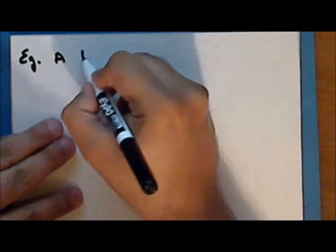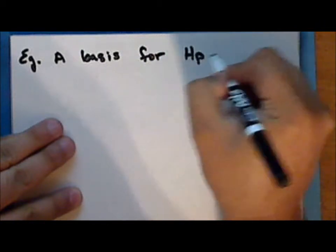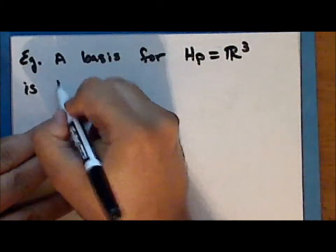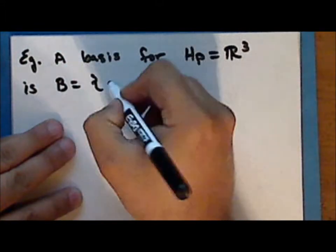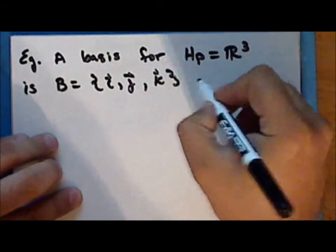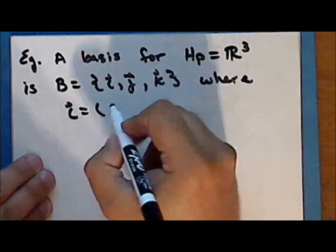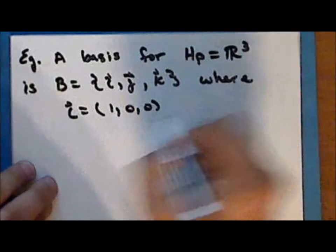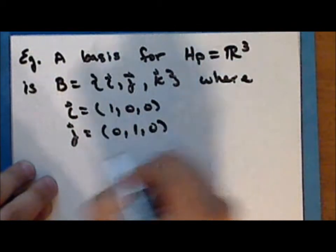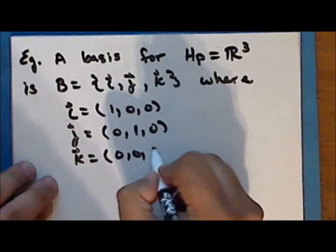A basis for the set of purely imaginary quaternions, considered as the coordinate space R³, is the set B containing the vectors i, j, and k, where the vector i is the ordered triple (1, 0, 0), the vector j is the ordered triple (0, 1, 0), and the vector k is the ordered triple (0, 0, 1).